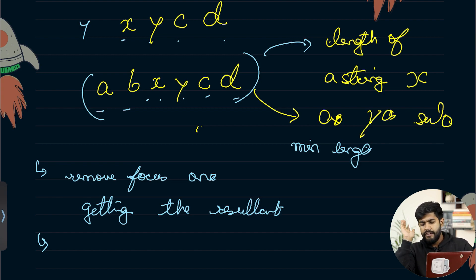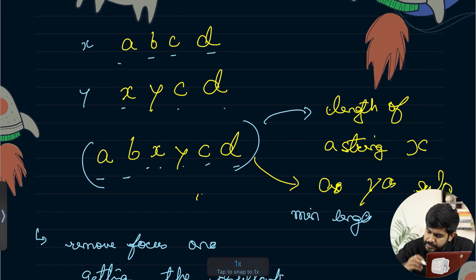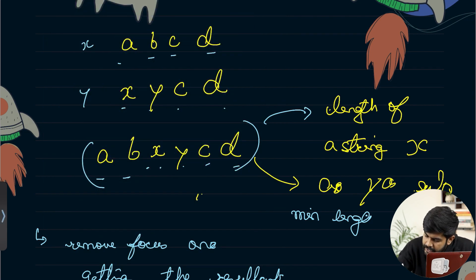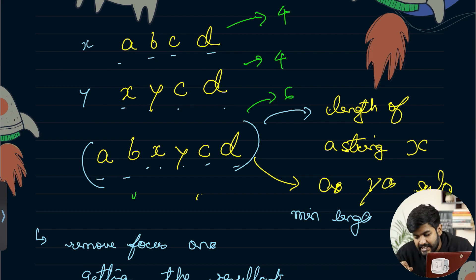Now, if only the length is asked, the first observation you would see is: what is this length? The length of X, Y, C, Z, C, D is six, and the length of A, B, C, D is four. So if you observe, this somewhat has a relation.